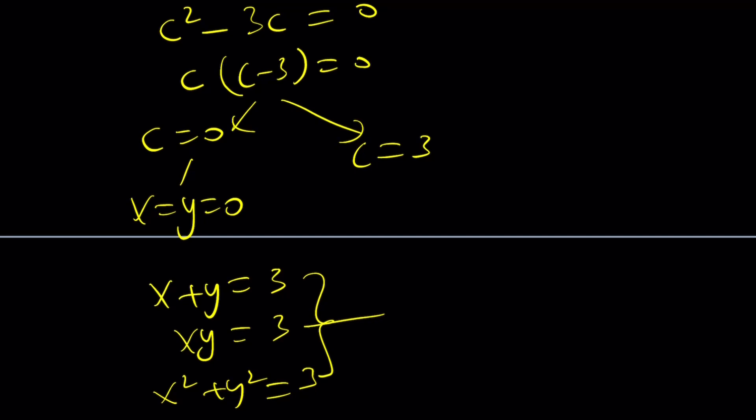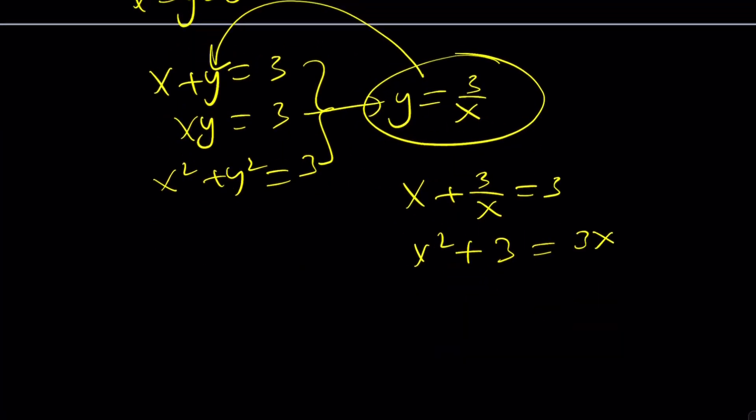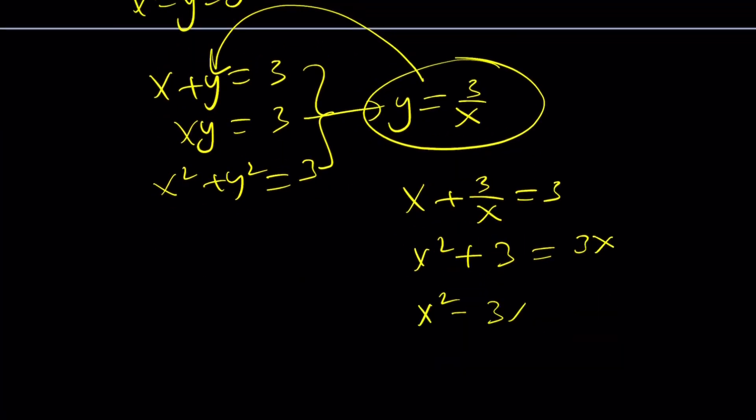You can isolate y from here, write it as 3 over x, and then plug it in here. You get a quadratic: x plus 3 over x equals 3. And solving this quadratic is going to give you the same solutions. Like, multiply by x. 3x squared plus 3 equals 3x. And then that's going to give you the exact same quadratic equation with the complex solutions. Remember that. But from here, basically you're going to be getting 3 plus minus root 3i over 2. And x and y are just going to be interchangeable again, right?